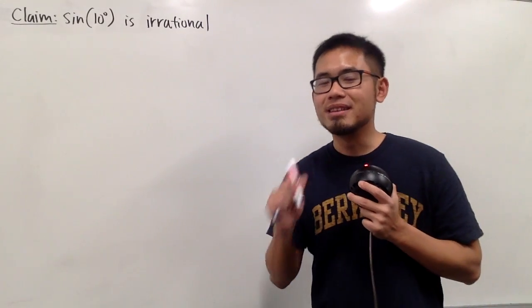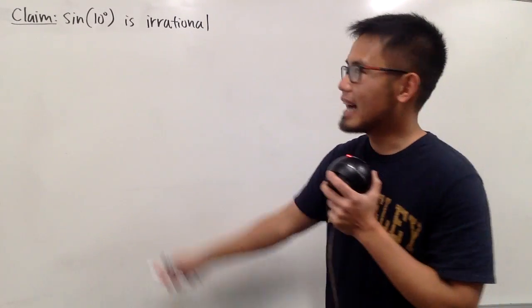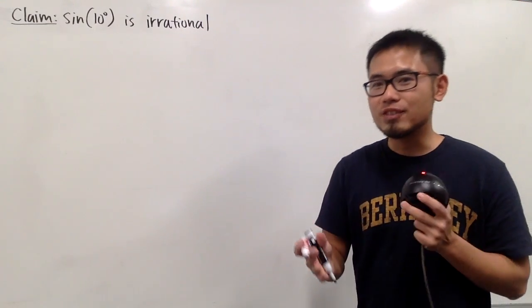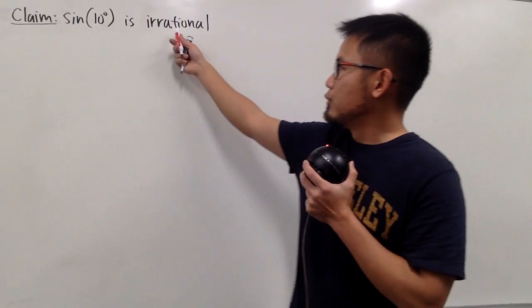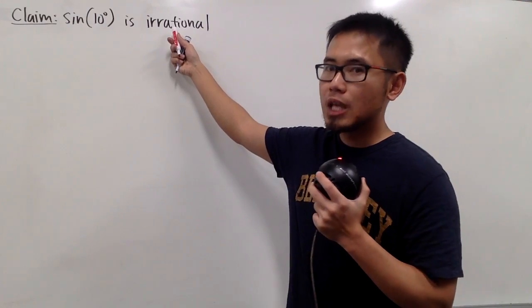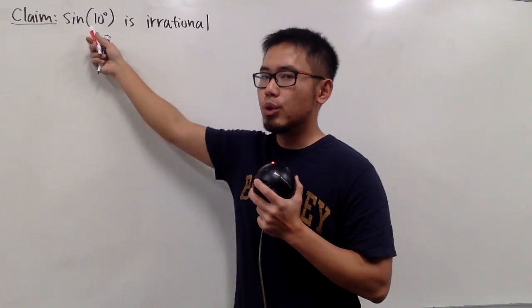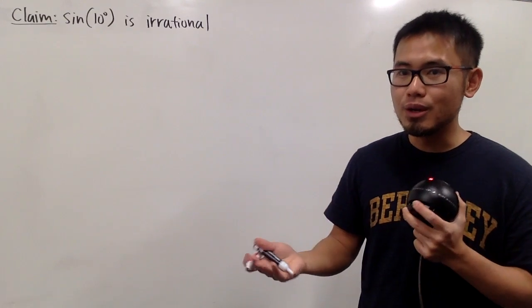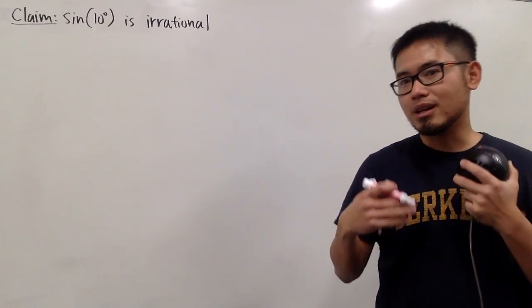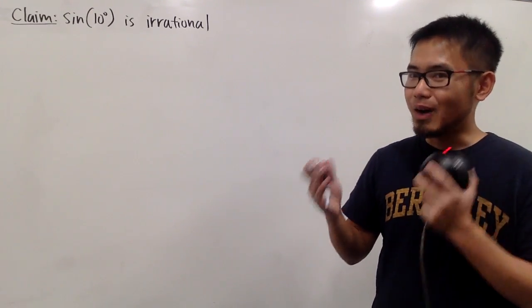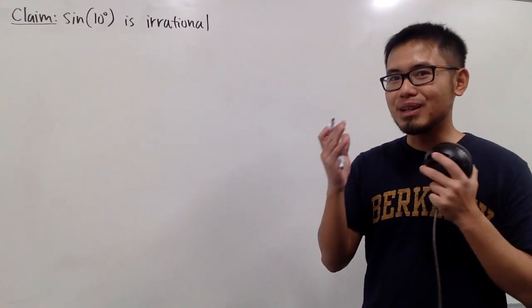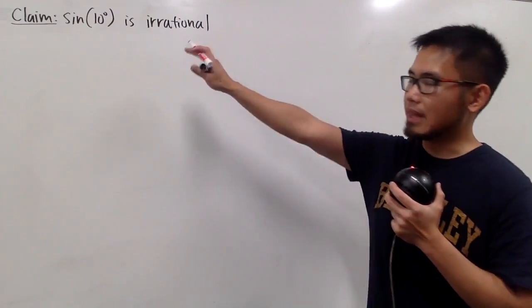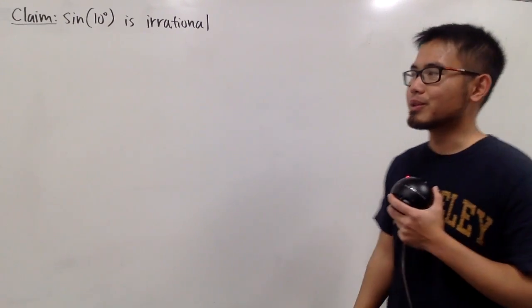Let's do a classic proof for fun. This time we're going to prove that sin of 10 degrees is irrational. You may be wondering: if you want to show a number is irrational, can we just let this equal to a over b, where a and b are integers and b is not equal to 0, and from there try to get a contradiction? I will leave that approach to you, because in this video I will show another approach to show a number is irrational.